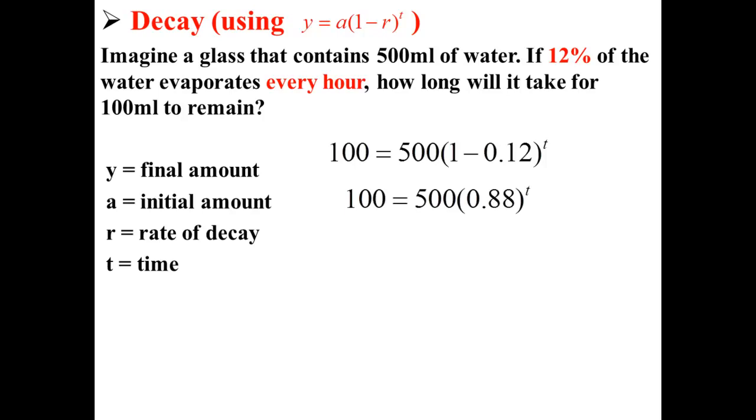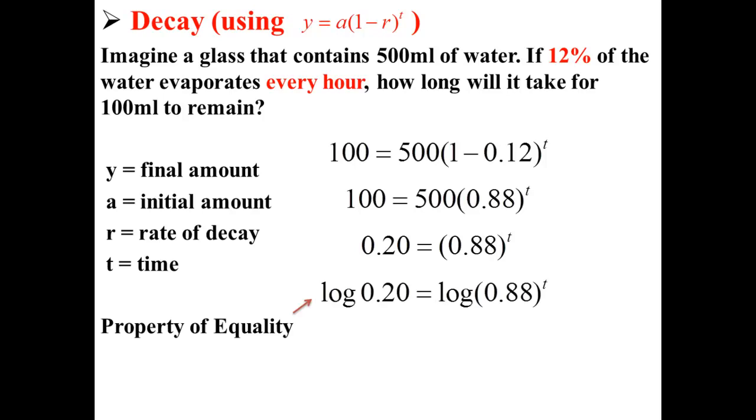Here we simplify to 100 equals 500 times 0.88 to the t. Next we divide to get 0.20 is equal to 0.88 to the t. Next we take the logarithm of each side, and taking the logarithm allows us to bring down the exponent. So now we have log 0.20 is equal to t times the log of 0.88.